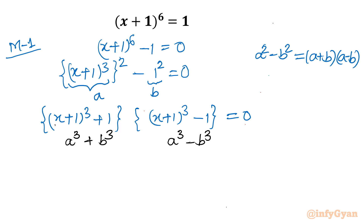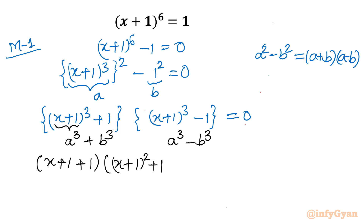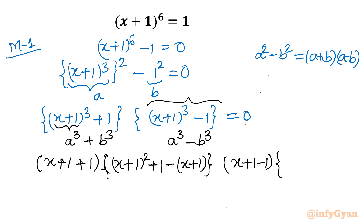For a cube plus b cube, we are considering x plus 1 as a. So we write a plus b, which is x plus 1 plus 1. Then in one bracket, a squared, so x plus 1 whole square, plus b squared, which is 1, minus ab, so minus x plus 1. Then for a cube minus b cube, we write a minus b, which is x plus 1 minus 1, and in the curly bracket a squared plus b squared plus ab as per the formula: a squared, where a is x plus 1, plus b squared which is 1, plus ab.